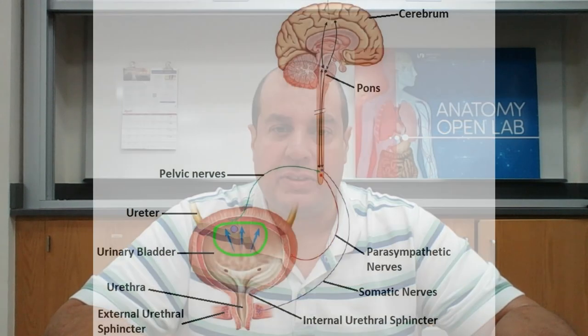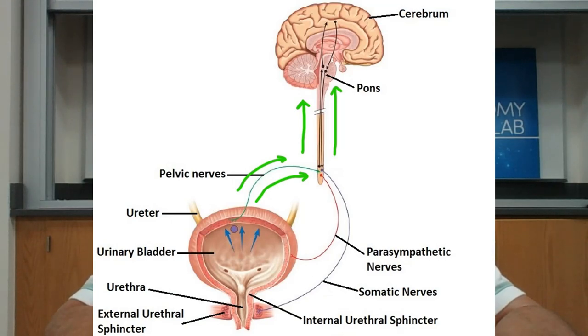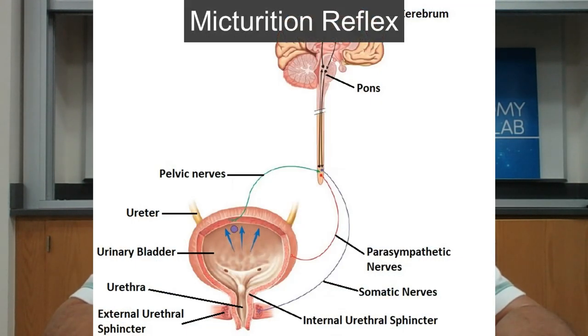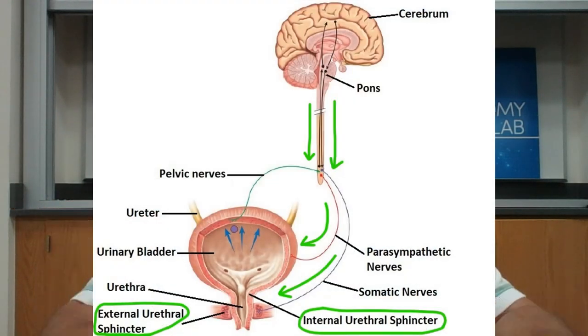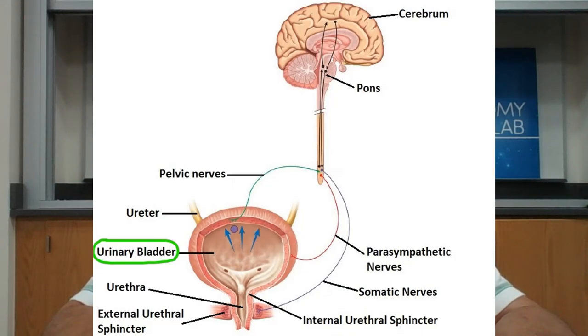The urinary bladder has stretch receptors that send a signal to the brain when it is too full — this is called the micturition reflex. When the urinary bladder is too full, the internal urethral sphincter relaxes, followed by the external urethral sphincter, allowing urine to be pushed out by the muscular bladder wall through the urethra and out of the body. Once the involuntary sphincter relaxes, you have to go to the bathroom no matter what.